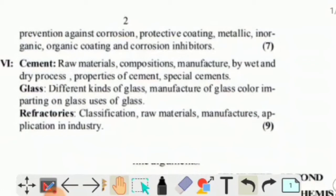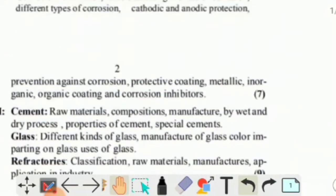Unit 6 covers Cement, Glass, and Refractories. For cement: raw material, composition, manufacture by wet and dry process, properties, and special cement. For glass: different kinds, manufacture, color imparting, and uses. For refractories: classification, raw material, manufacture, and application in industry. This completes Section A and Section B of semester one.